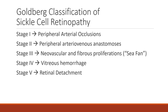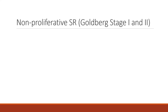Sickle cell retinopathy is divided into five stages that progress from benign changes to severe complications. Stage 1 involves peripheral arterial occlusions. Stage 2, peripheral arterial venous anastomosis. Stage 3 presents with neovascular and fibrous proliferations that have a sea-fan appearance. The final two stages are complications from neovascularization. Stage 4 is vitreous hemorrhage, and stage 5 is retinal detachment.